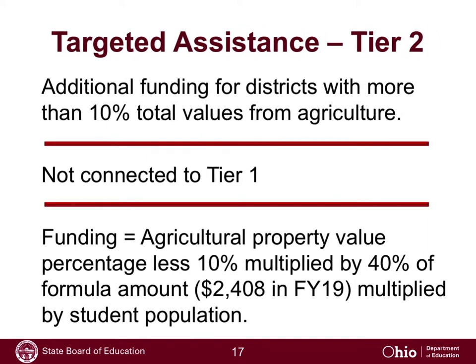The second tier within targeted assistance funding is relatively new and applies to districts that have a large share of their value in agricultural property. The qualifier is not based on a wealth per pupil measure, but on the percentage of agricultural value comprising a district's total valuation. To qualify, a district must have more than 10% of its total value in the form of agricultural value. The funding is scaled so that the higher the percentage of agricultural value, the higher the per pupil amount ultimately provided.